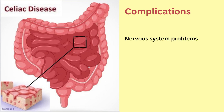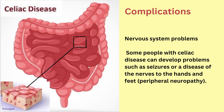The next complication is nervous system problems. Some people with celiac disease can develop problems such as seizures or a disease of the nerves through the hands and feet called peripheral neuropathy.